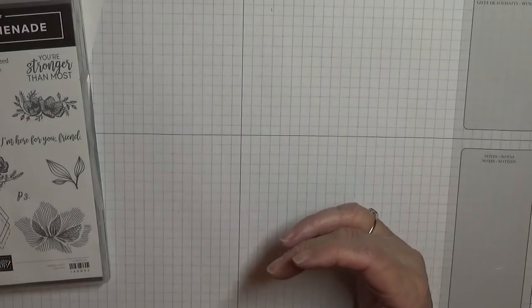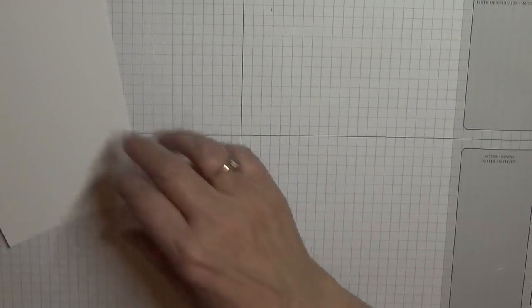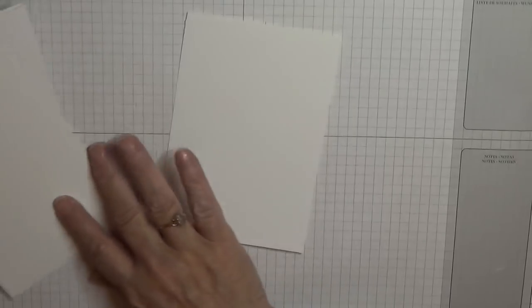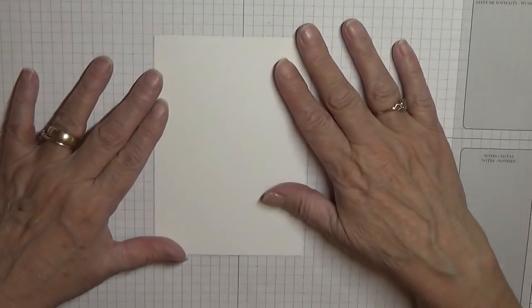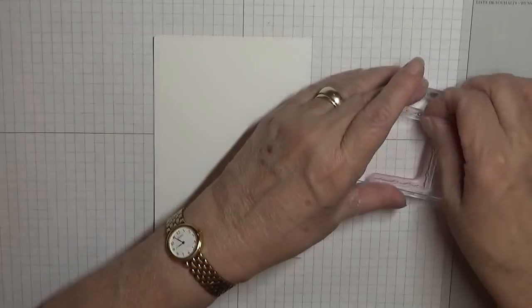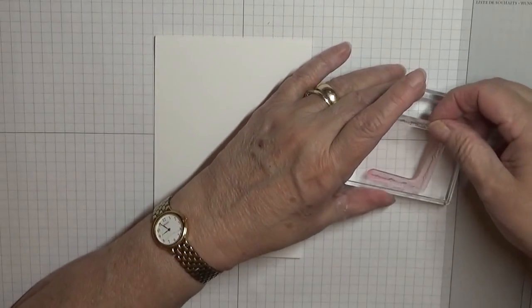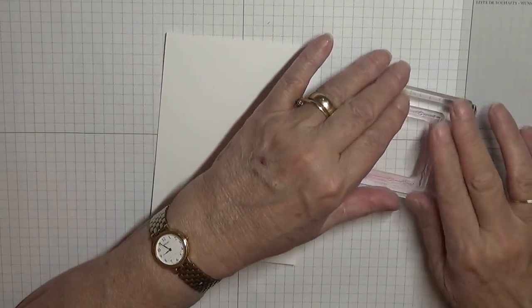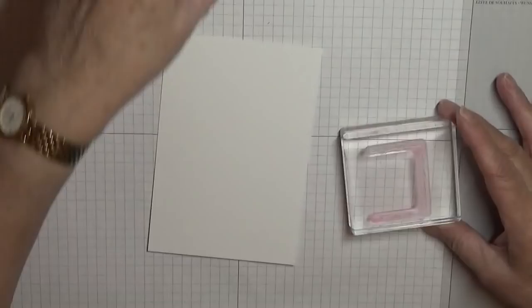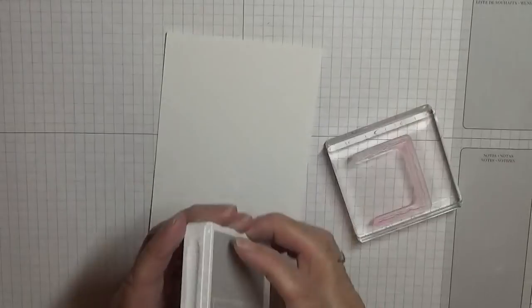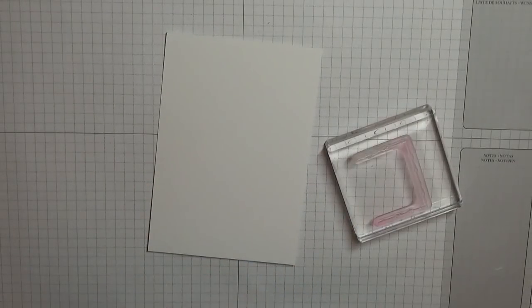So to make this card, I got my card base, no my card top, the three-quarters of a frame because there's a side missing of it. We're only going to ink up with Smoky Slate two bits of it.